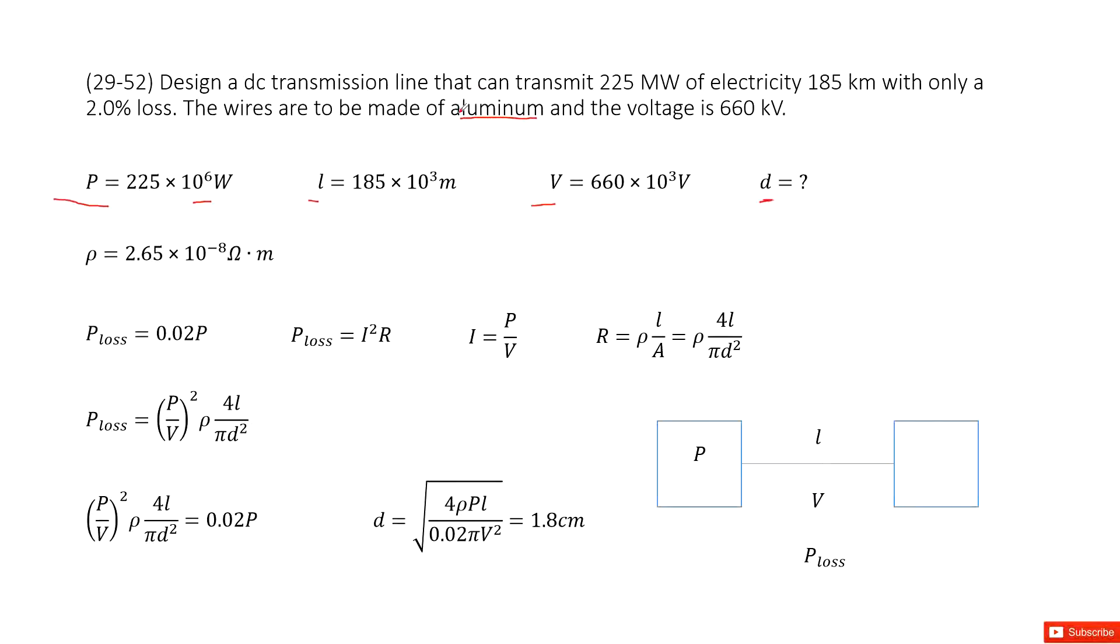And then this tells us the aluminum cable, so the resistivity is given. So we come back, we list the given quantities.